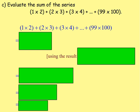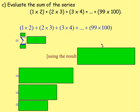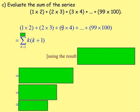Part C: evaluate the sum of the series 1×2 plus 2×3 plus 3×4 plus all the way up to 99×100. We can express this using sigma notation. Let k equal 1 for the first term — we have k times the number above it, which is k+1. Moving on, when k is 2 we multiply by k+1, and when k is 3 again by k+1. The last term is 99×100, so 99 is the value of k. We evaluate the sum of k(k+1) from k equals 1 all the way up to 99.